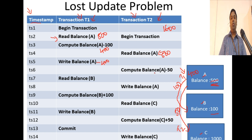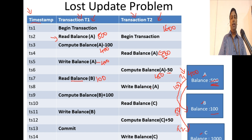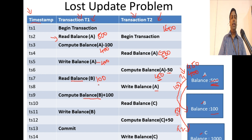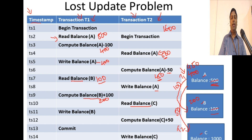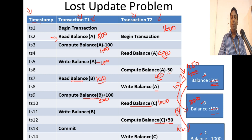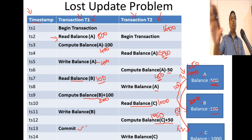Switching to T2, it computes balance of A minus 50. It has already read 500, so 500 minus 50 is 450. T1 reads balance of B from the buffer, which is 100. T2 writes balance of A as 450, updating the buffer. T1 then computes balance of B plus 100, which is 200, and writes it to the buffer. T2 reads balance of C, which is 1000, and computes C plus 50, which is 1050. T2 commits — meaning all changes are permanent, flushing the data from the buffer to the hard disk.